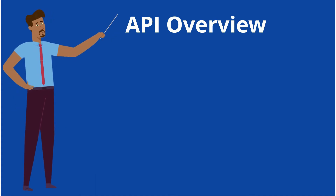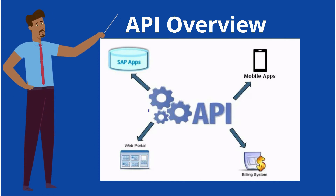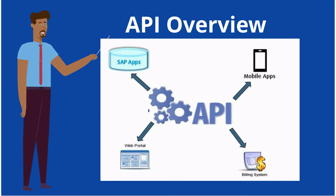Let's consider this figure to understand more on API. Assume we have four different applications — SAP, mobile apps, web portal, and billing system — which are integrated by a common interface as API. Here, API is working as an interpreter. Each of the systems interacts with each other by sending an API request and receiving the API response. Basically, each system communicates with API and, based on the request, API routes the messages to the target system.